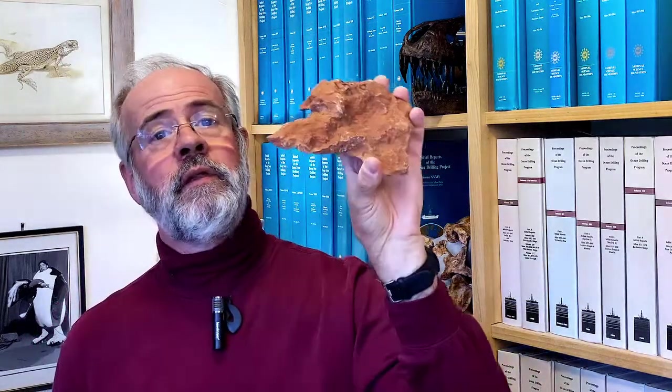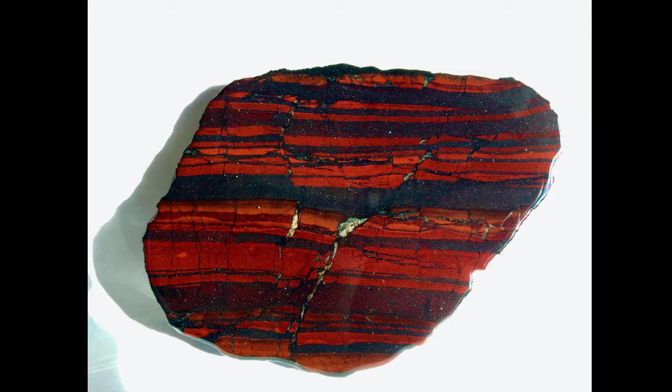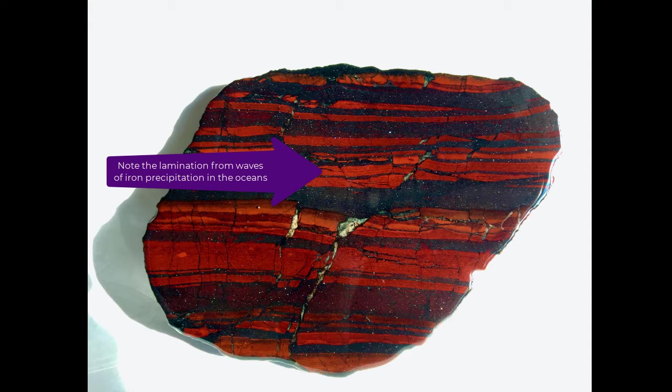Consider these rocks. First, there's this one called a banded iron formation, and there's also another one called a red bed — basically a red soil. Banded iron formations make up about 90% of the iron mined on Earth. These turn up in the rock record about two and a half billion years ago, but not before.